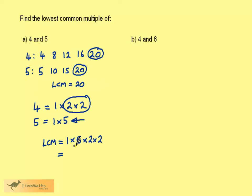1 times 5 is 5, times 2 is 10, times 2 again is 20. Note how we get the same value for the lowest common multiple.